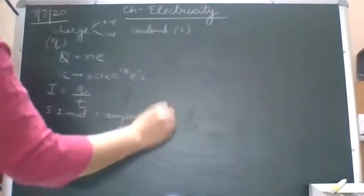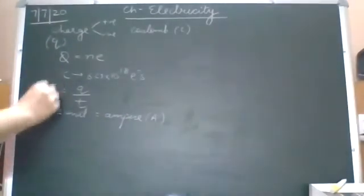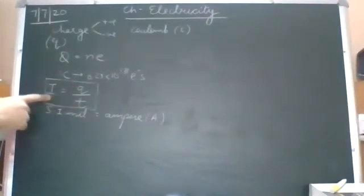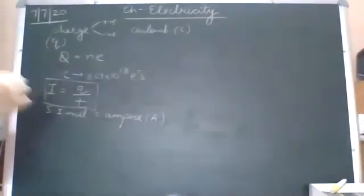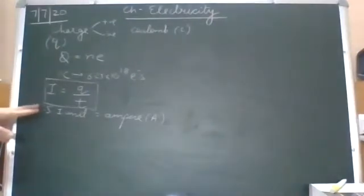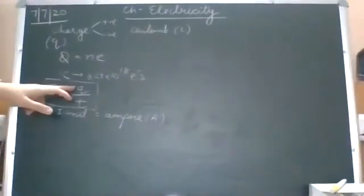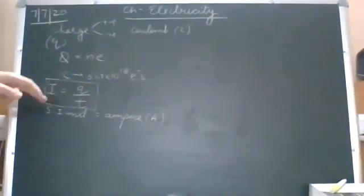Symbol: capital A. Current symbol: capital I. One ampere — we had defined this: when one coulomb of charge flows through a cross section in one second, we say the current is one ampere. That is the definition of current — it is a very important one-marker. I hope all of you have written it. Current is the amount of charge flowing through a unit cross section per second. We did numericals on this.